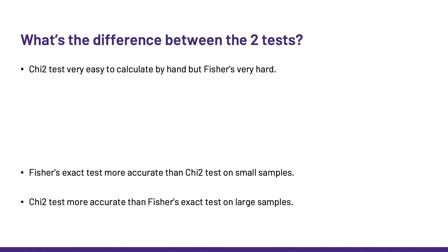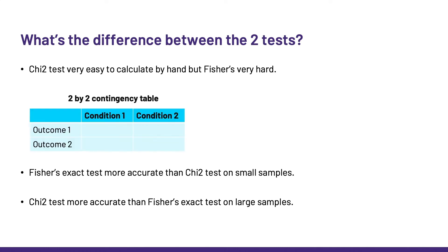What is the difference between the tests? For a start, the chi-square is easy to calculate by hand, but the Fisher is very hard, which is why many software including Prism will not run a Fisher's exact test on contingency tables bigger than two-by-two because it is too heavy computationally. The Fisher's exact test was specifically designed for small samples and will be more accurate, giving an exact p-value, whereas the chi-square gives only an approximation. Conversely, the chi-square is more accurate on large samples.